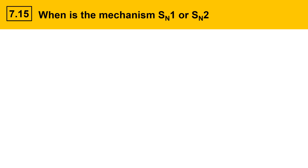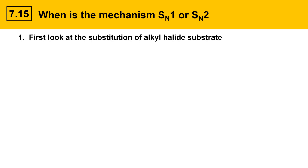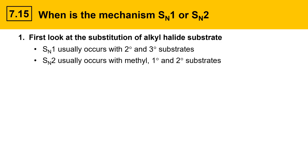On this next slide, we'll answer the question: when is the mechanism SN1 or SN2? Based on the information in the previous two slides, the first thing you should do is look at the substitution of the alkyl halide substrate. It's easy to do, and it oftentimes tells you what you need to know right away. SN1 usually occurs with secondary and tertiary substrates. SN2 usually occurs with methyl, primary, or secondary substrates. However, secondary alkyl halides are listed as possibilities in both SN1 and SN2 mechanisms, so in those cases you need to look a little further.